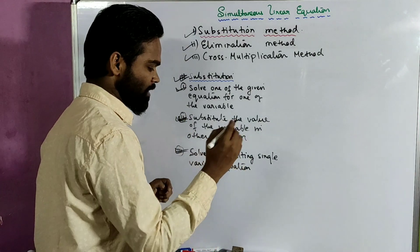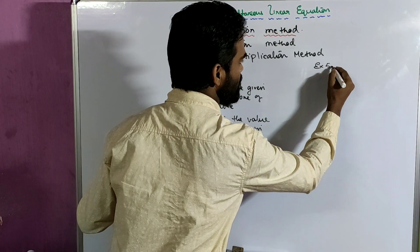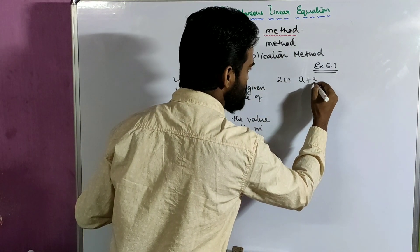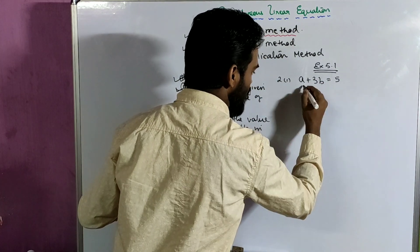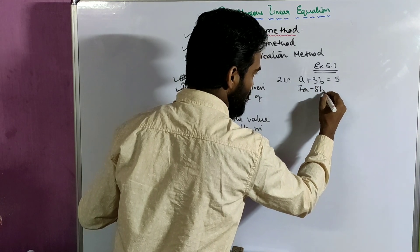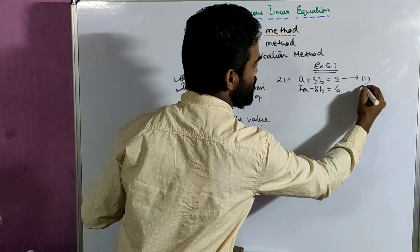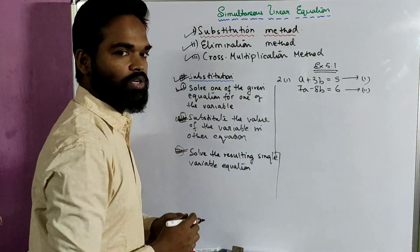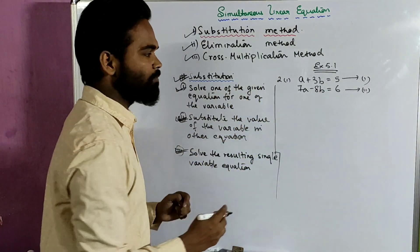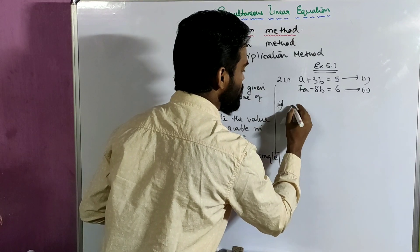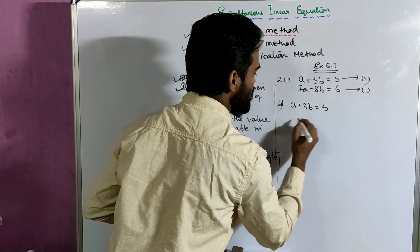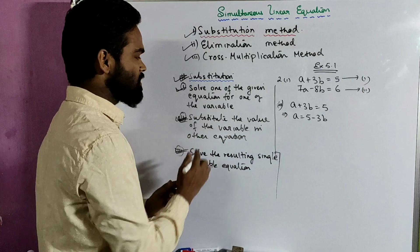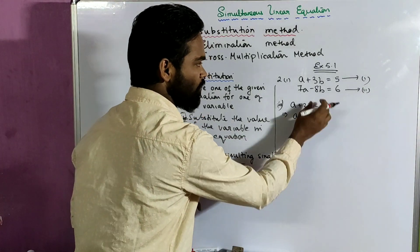I'll show you an example. Let's take a sum from Exercise 5.1, number 2 part 1, which says: a plus 3b equals to 5, and 7a minus 8b equals to 6. The first is equation 1 and the second is equation 2. I'll choose the first equation and make a the subject. So from a plus 3b equals to 5, I can write a equals to 5 minus 3b. I've made a the subject. Now I'll substitute this value in the other equation.